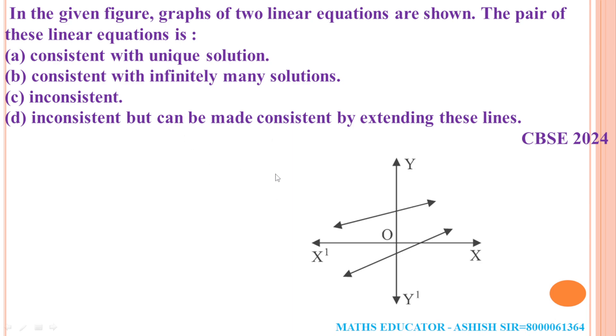We have this question where the given pair of lines are consistent with unique solution, consistent with infinite solutions, or inconsistent. For the given pair of lines, there are three kinds of lines: parallel, coincide, and intersecting.